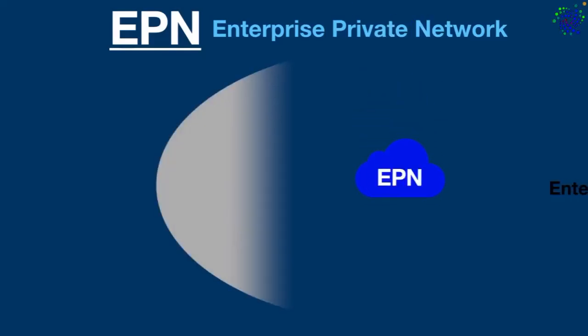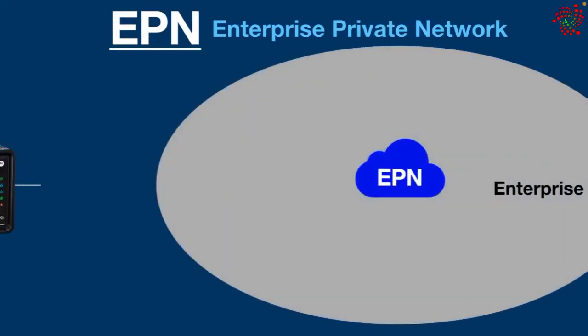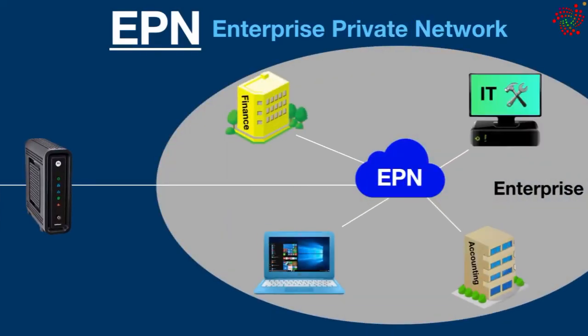The next type is EPN — Enterprise Private Network. EPN is designed for businesses to securely connect all computers from multiple locations to transfer data and resources. This type of network is only accessible from within the enterprise.